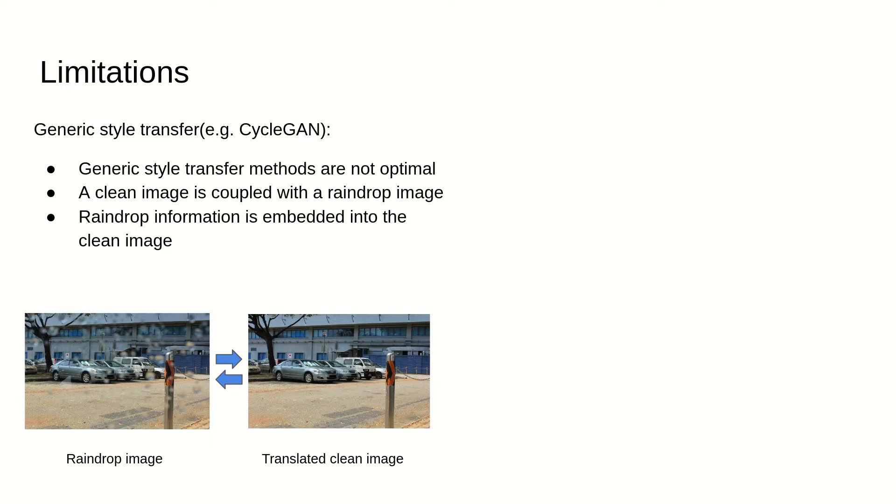Generic style transfer such as CycleGAN has demonstrated the possibility for style transfer with only unpaired data. However, the cycle consistency constraint couples the rain drop images and the translated clean images. The rain drop information is embedded into the translated clean images, so it can be translated back to the original rain drop images. This embedded information creates artifacts on the translated clean image.